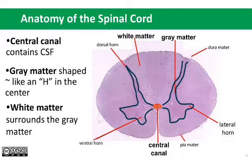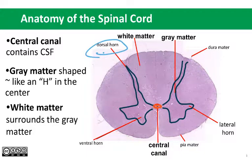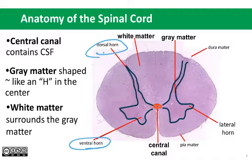Notice that there is an asymmetry in the gray matter. The upper part of the H — the dorsal side, or back side of the cord — is smaller, and there's a functional reason for that. The ventral side is where the cell bodies of motor neurons are located. The dorsal horn accepts incoming sensory information and is composed of interneurons that relay that sensory information.